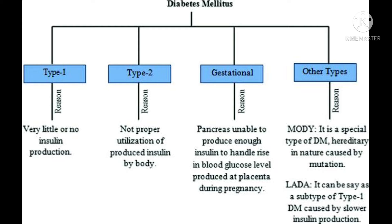Next is gestational diabetes. The pancreas is unable to produce enough insulin to handle the rise in blood glucose levels produced by the placenta during pregnancy. During the pregnancy period, glucose levels increase, which is why gestational diabetes occurs.